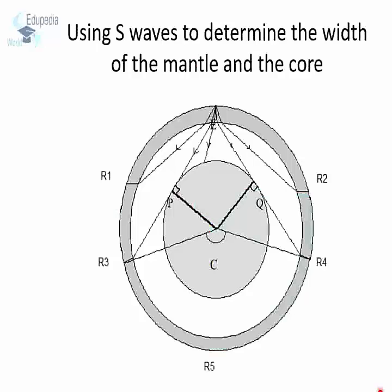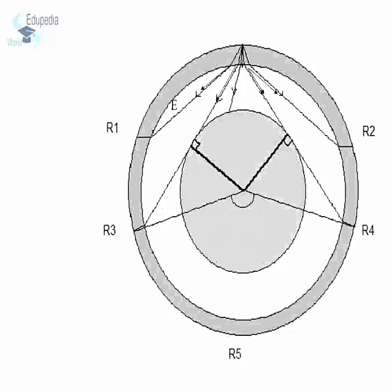Further, we use S waves to calculate the thickness of the mantle and core. Let's see how it's done. Observe the diagram carefully. An explosion is created at point E on the Earth's surface, due to which S waves will travel in all directions. Most of them are refracted by the mantle and are received at points R1, R2, R3, and R4. Some of these S waves are blocked by the core, which suggests that the core is in a liquid state.